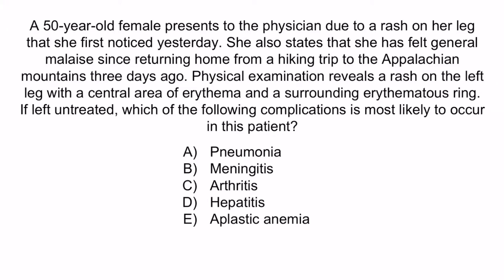A 50-year-old female presents to the physician due to a rash on her leg that she first noticed yesterday. She also states that she has felt general malaise since returning home from a hiking trip to the Appalachian Mountains three days ago. Physical examination reveals a rash on the left leg with a central area of erythema and a surrounding erythematous ring. There are two key points: she recently traveled to the Appalachian Mountains, located on the east coast, and she developed a rash describing erythema migrans — the bullseye rash associated with stage one of Lyme disease. This rash occurs in approximately 80% of patients and is pretty unique to Lyme disease, and traveling to a wooded area on the east coast where the Ixodes tick is prevalent is highly suggestive of Lyme disease.